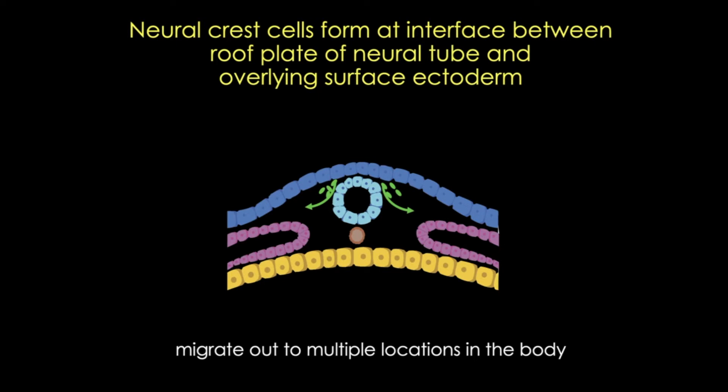These cells are multipotent — they have the ability to give rise to many cell types within the embryo. Many different systems, including the nervous system, skin, teeth, face, heart, adrenal glands, and the gastrointestinal tract, all have contributions from neural crest. I'll talk more specifically about those fates in just a minute, but first I want to touch on what controls the fate of neural crest cells and how they know where they're going and what to become.